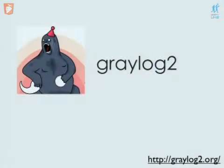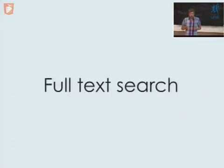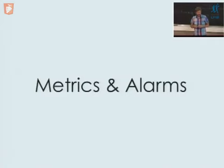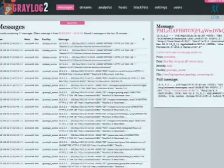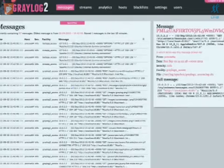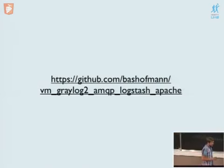Graylog2 is a very nice tool for having logs available, making them full-text searchable. It understands structured messages — basically JSON — and also supports metrics and alarms on your log messages, so you can set a threshold and get an email notification if you get more log messages than expected, like a spike in exceptions. I've also built a Vagrant virtual machine so you can try it out easily — just go to GitHub and pull up the Vagrant VM.